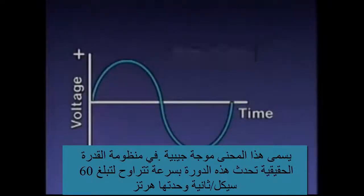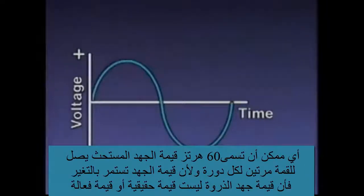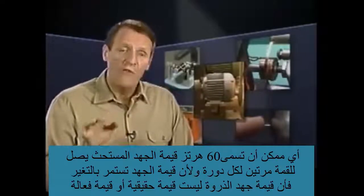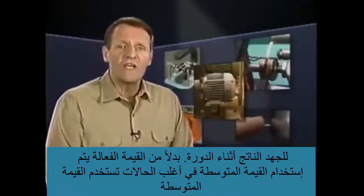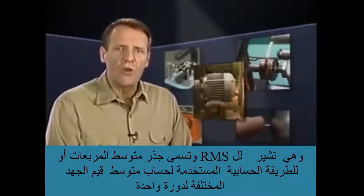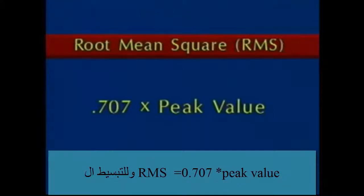In an actual power system, cycles occur rapidly — in many cases, 60 complete cycles each second. The unit representing cycles per second is hertz, so 60 cycles per second is referred to as 60 hertz. The value of induced voltage is at a peak twice during each cycle. Since voltage is continually changing, the peak value is not the true or effective value. Instead, the effective voltage is an average value called the root mean square, or RMS value. For simplicity, the RMS value is given as 0.707 times the peak value.